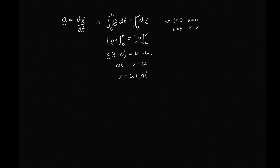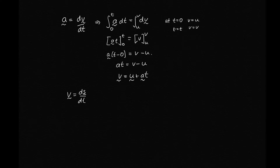This is a vector equation, so we can write it as vector v = vector u + vector a times t. To get our next kinematic equation, we'll need to use v = ds/dt.